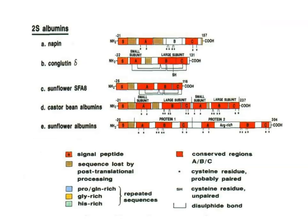The main structures of 2S albumins include napin, conglutin, sunflower SFA-8, castor bean albumin, and sunflower albumin. Three conserved regions — A, B, and C — shown in red are present in all of these, and these three regions show homology with each other and contain cysteine residues that may be conserved within or between the different groups of the protein.